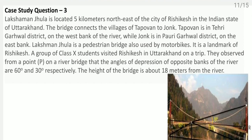Case study question three: Lakshman Jhula is located 5 kilometres north-east of Rishikesh in Uttarakhand. The bridge connects Tapuwan in Tehri Garhwal district on the west bank to Jong in Pauri Garhwal district on the east bank. It is a pedestrian bridge and a landmark of Rishikesh. A group of class 10 students visited Rishikesh and observed from point P on the bridge.